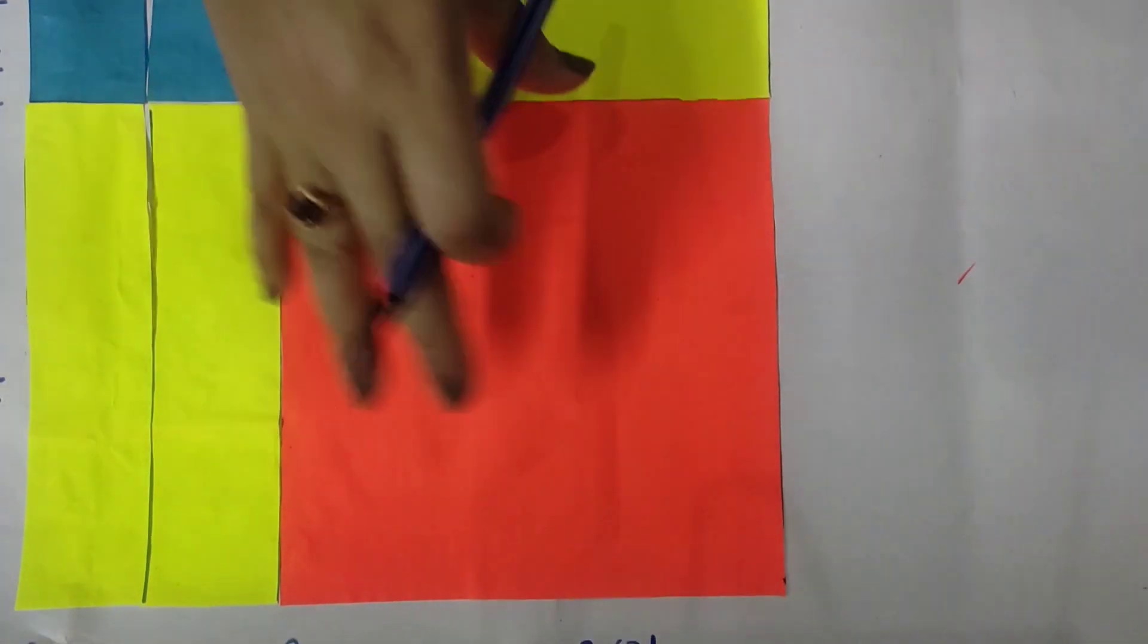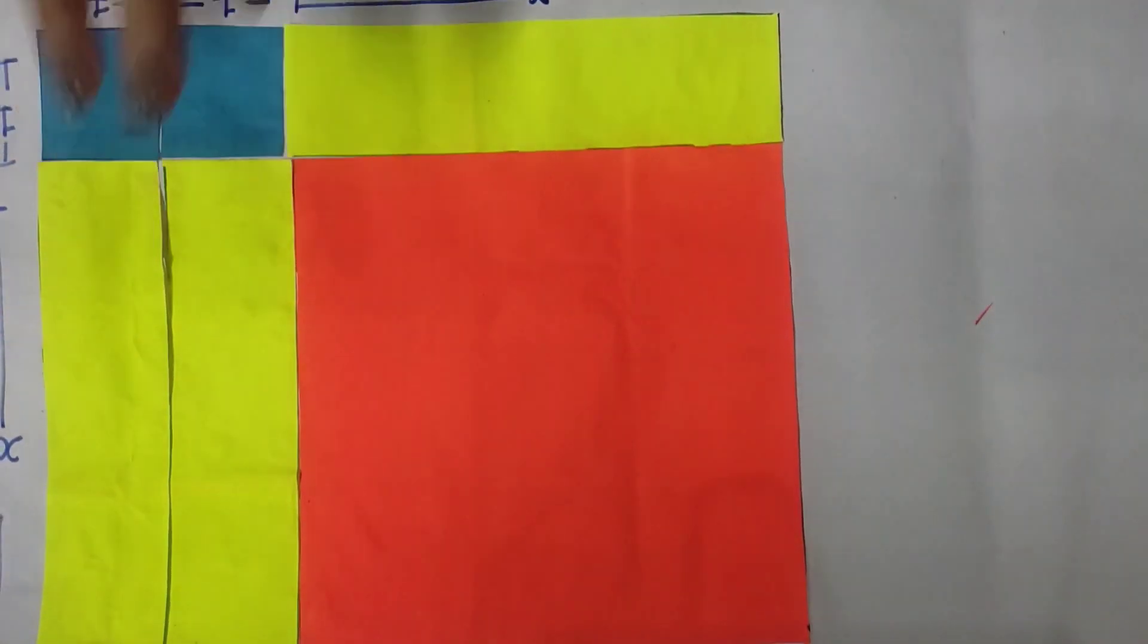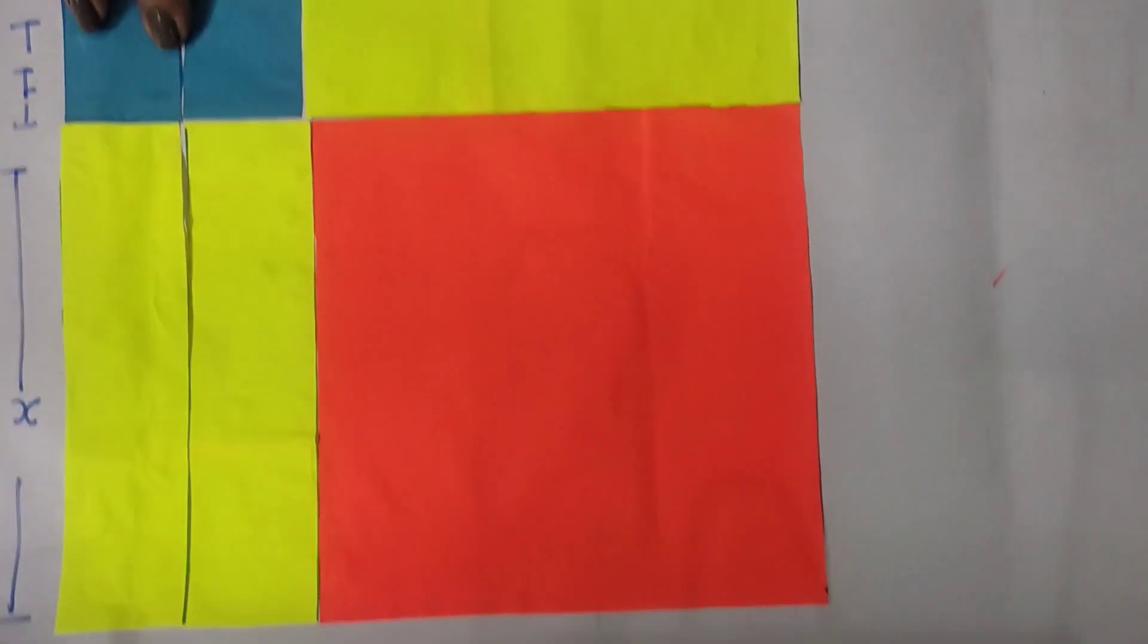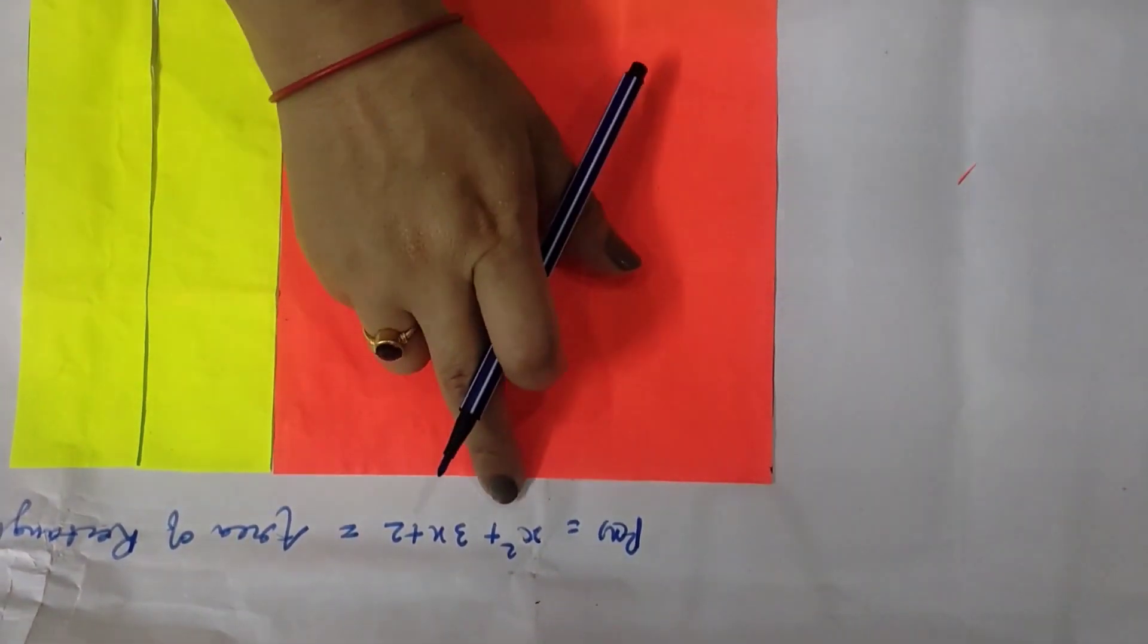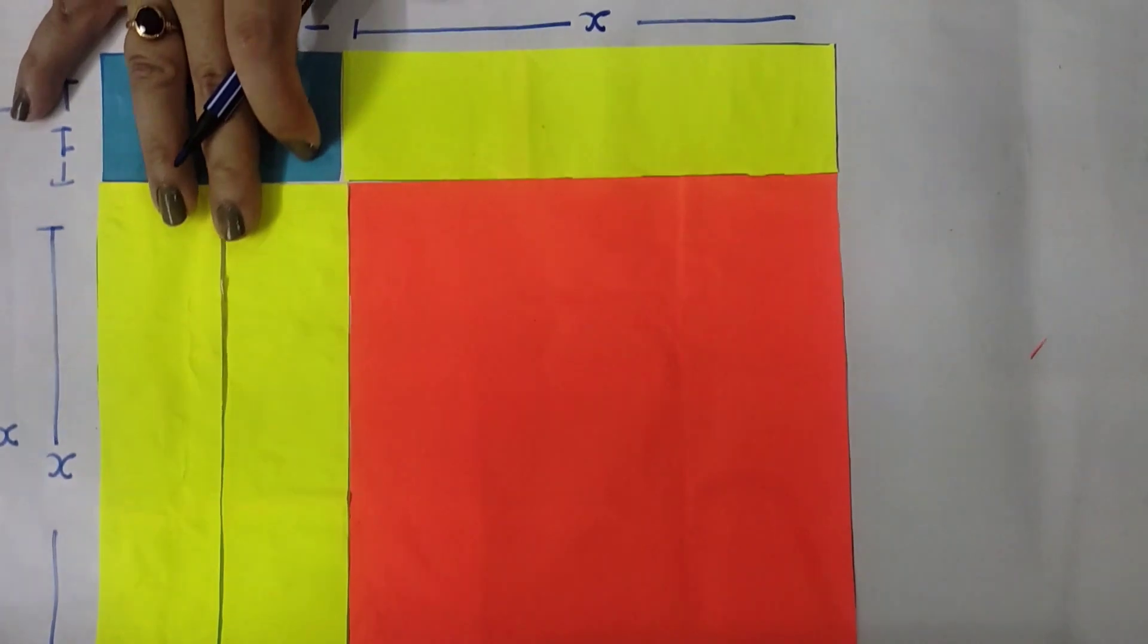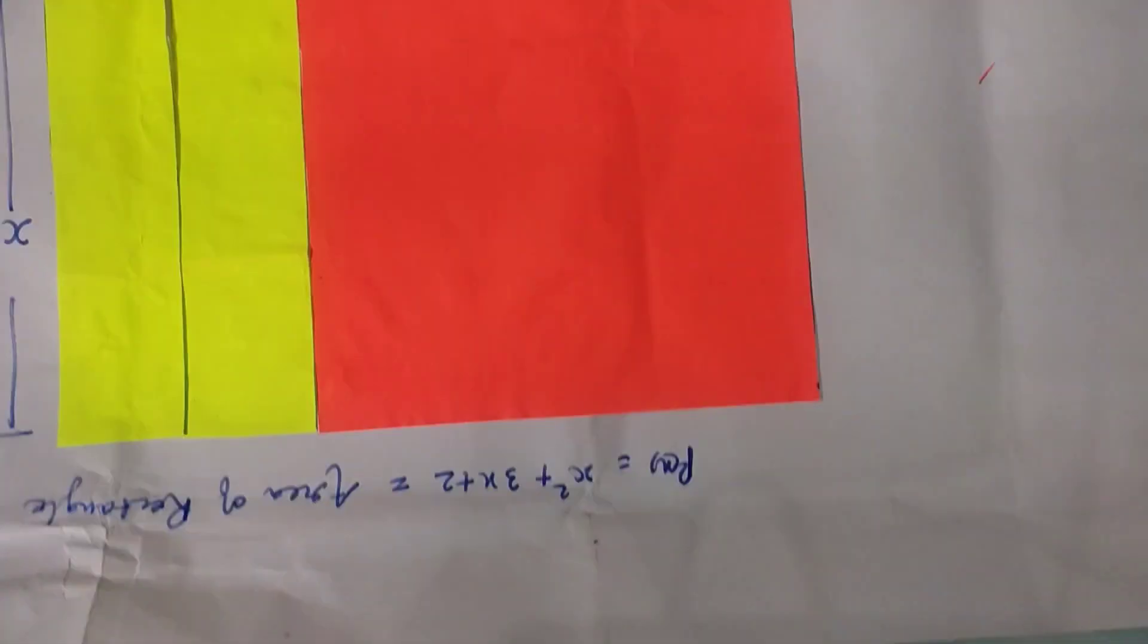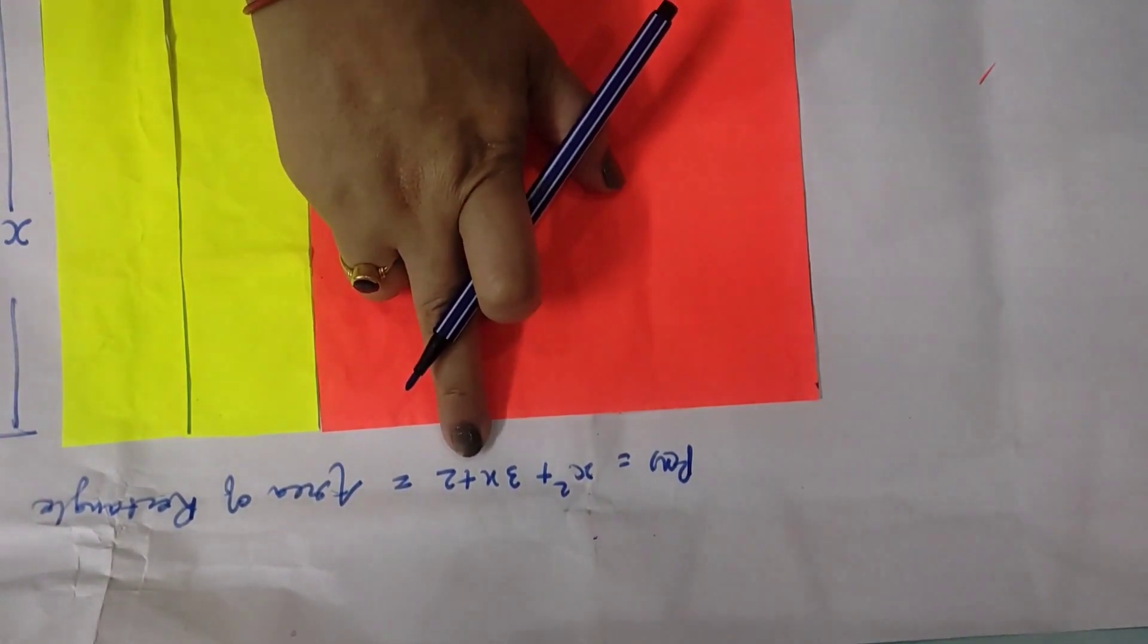This is your rectangle, in which the square is orange in color and three rectangles are yellow in color and two squares are blue in color. If you find the area of this rectangle, you get the polynomial x squared plus 3x plus 2.